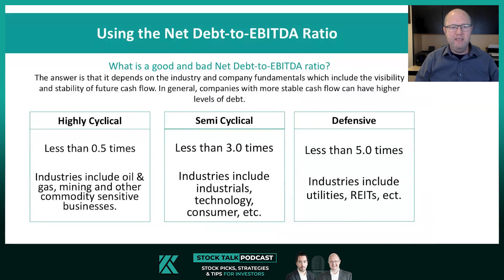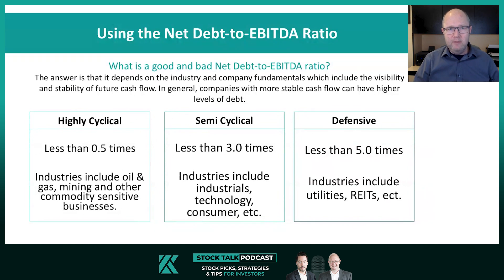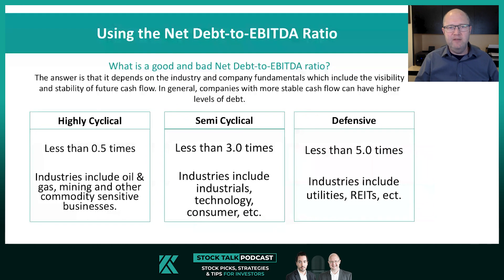I provided a couple of guidelines here, dividing stocks into three categories: highly cyclical, semi-cyclical, and defensive. These are really just guidelines, not hard and fast rules. Within these categories you're going to have widely different types of companies with different risk levels. There's no black and white in terms of what is a good or bad ratio. For highly cyclical industries we want that ratio to be low, ideally zero. If it's a very cyclical industry, we don't really want to see a lot of debt because we don't know if there's going to be any cash flow next year to service it. What industries would this be? Oil and gas producers, oil and gas service companies, mining, and other commodity-sensitive businesses.